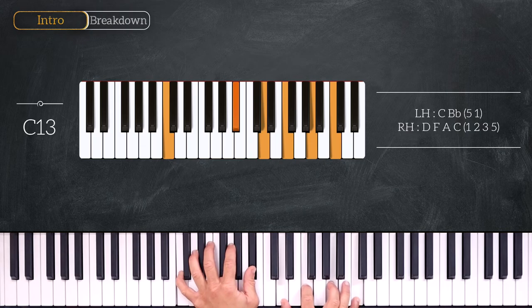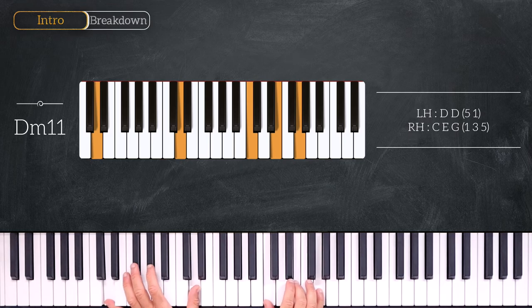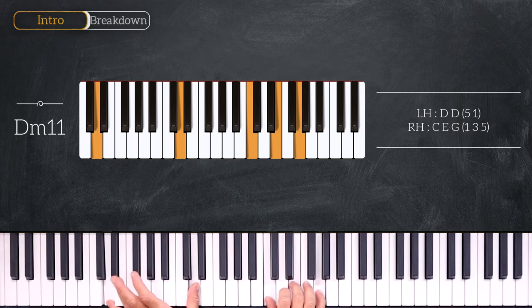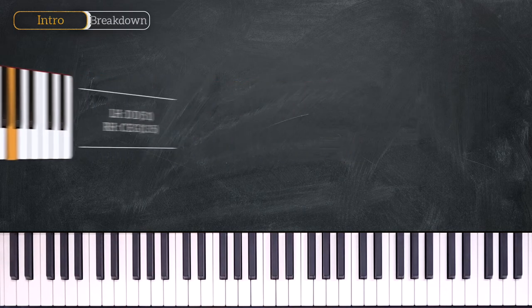And we'll finish this chord progression on this Dm11 chord with octave D on the left hand and C, E, G on the right hand. We can also interpret this chord as a C major over a D bass. All right, very nice.